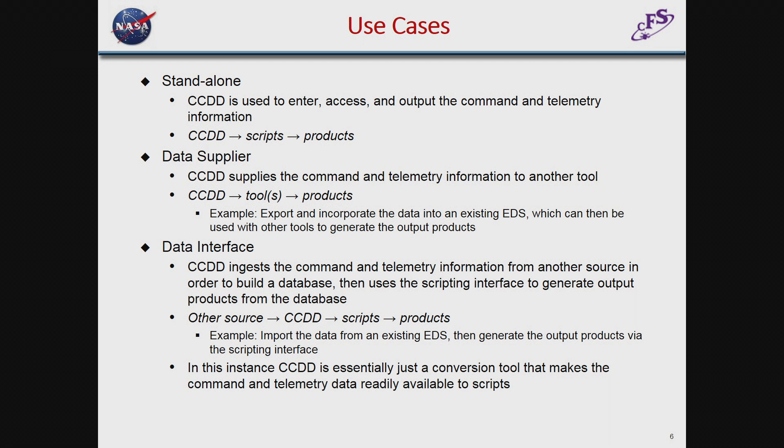The third way is as a data interface, where the program imports data from another source, constructs the database from that, and then uses the information to run scripts to produce the output. For example, if you had an existing electronic data sheet with command and telemetry data in it, you could feed that data to CCDD, it would construct a database of tables, and then use its scripting interface to create the products. In this case, CCDD acts as a conversion tool standing between the original source and those products.